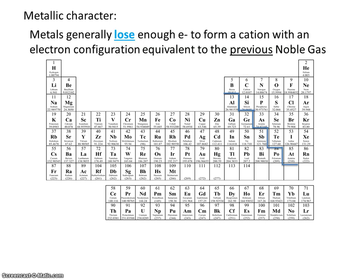Metallic character. Metals generally lose enough electrons to form a cation with an electron configuration equivalent to the previous noble gas. The metallic character increases as you go down and to the left. So this element here, francium, has the most metallic character, or is the most likely to lose an electron.